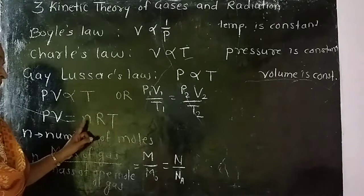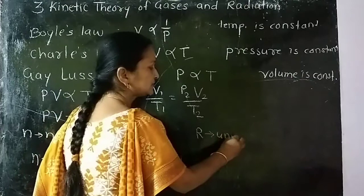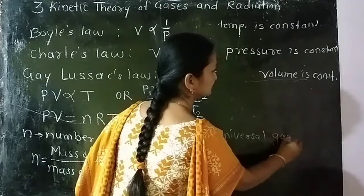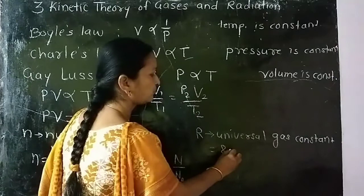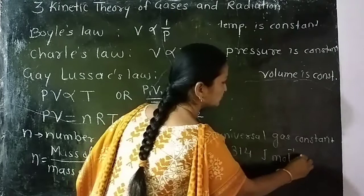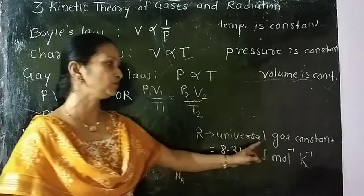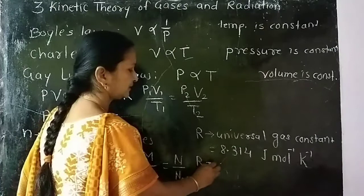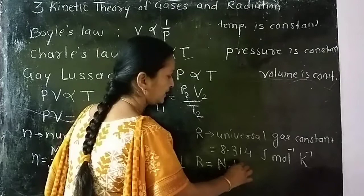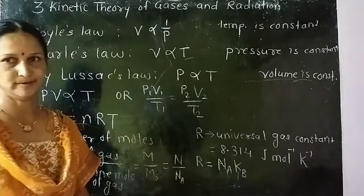Capital R is universal gas constant. Its value is 8.314 joule mole raised to minus 1 Kelvin raised to minus 1. R can be written related to Boltzmann constant. That is, R equals NA times KB, where KB is Boltzmann constant.